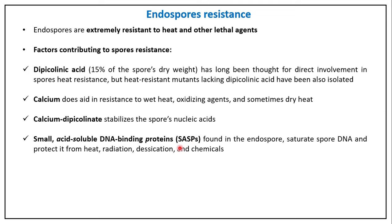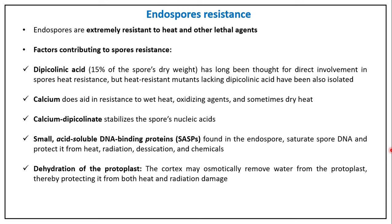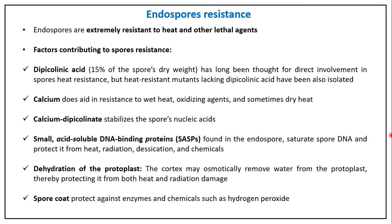Dehydration of the protoplast also contributes to resistance — the cortex may osmotically remove water from the protoplast, protecting it from heat and radiation damage. The spore coat protects against enzymes and chemicals such as hydrogen peroxide. In summary, factors responsible for endospore resistance include: DPA, calcium, calcium-DPA complex, SASPs, dehydration, low water activity, and the spore coat.